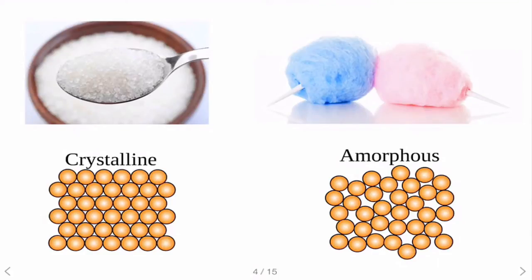As you can see in this picture, the table sugar here — which is sucrose — if you look at the molecular arrangement, the crystalline state has a more ordered molecular arrangement. It is more systematically arranged in a specific pattern, and it has what you call a long range order.